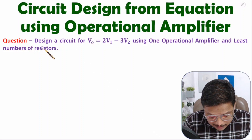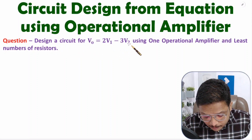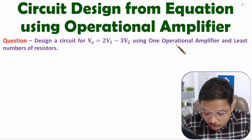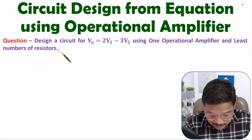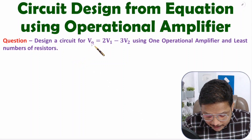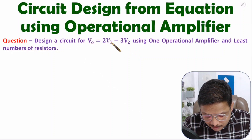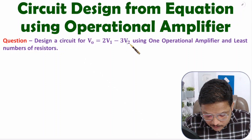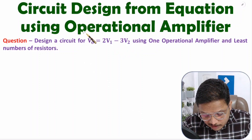If you read the question, here we need to design a circuit for the equation V0 is equal to 2V1 minus 3V2. We can use one operational amplifier and we need to use the least number of resistors. If you carefully observe output V0, that is depending on inputs V1 and V2. V1 is having positive voltage and V2 is having negative voltage, so we need to use both positive and negative inputs along with the operational amplifier.